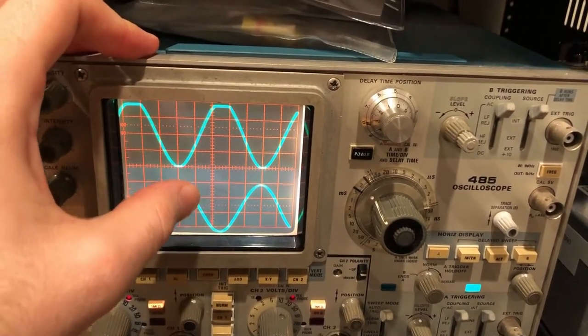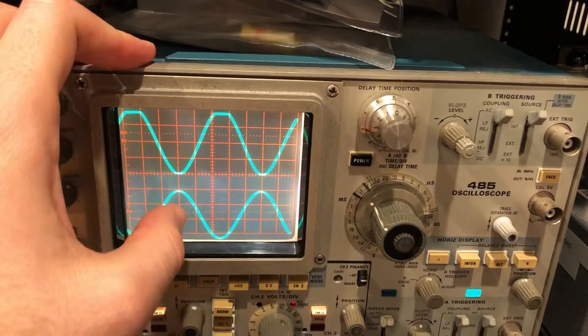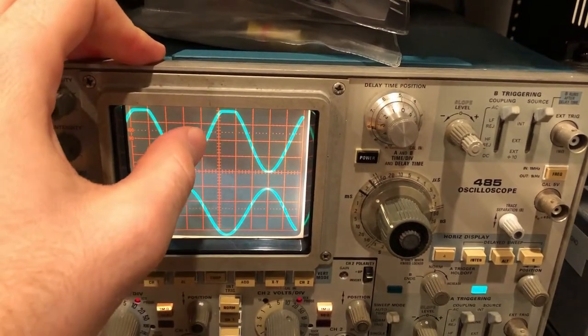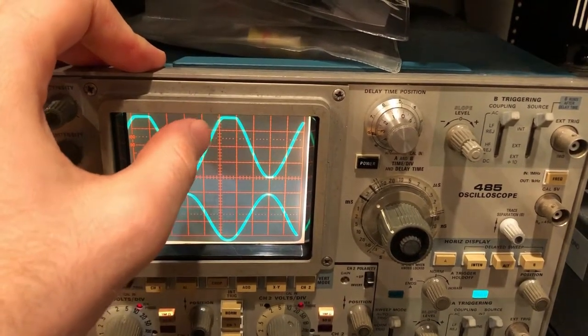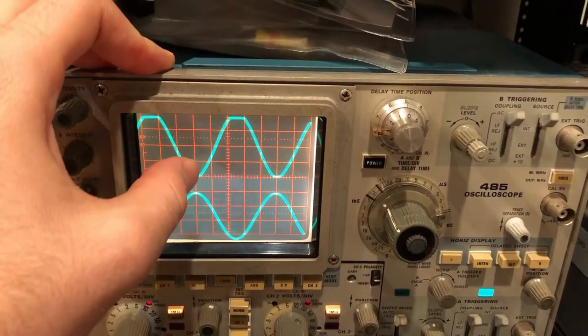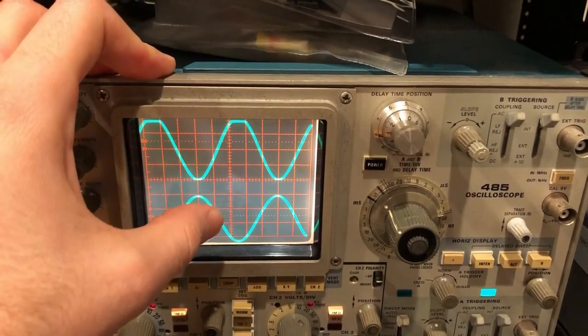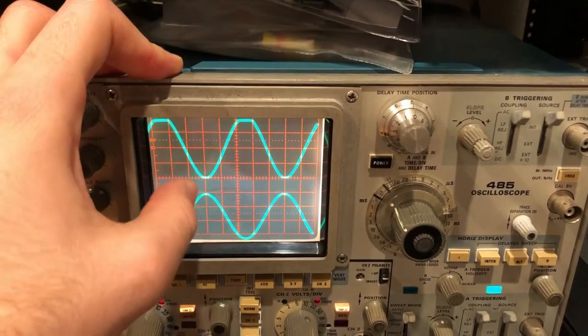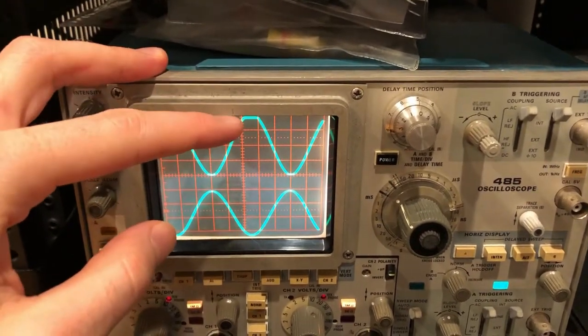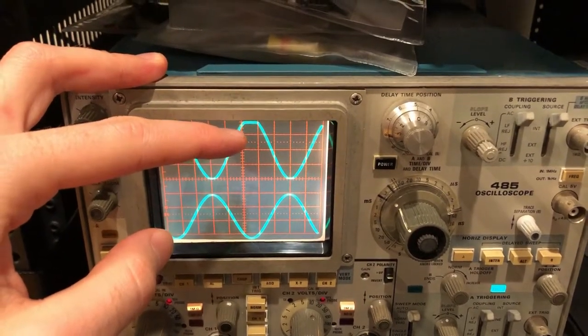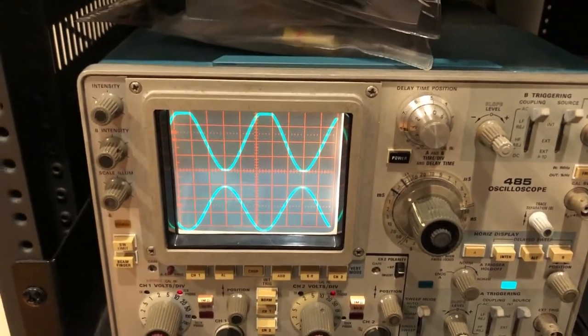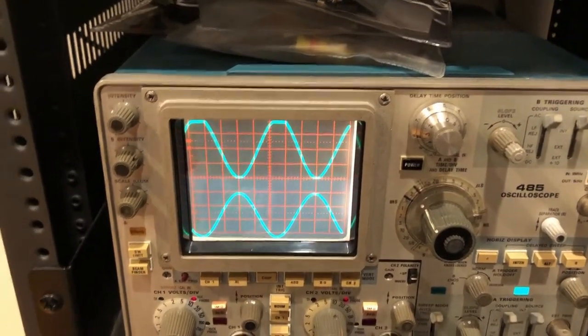So as the input of our second gain stage goes negative, the output is clipping positive. If you follow the previous discussions on the headroom requirements of our constant current source, that's exactly what we're running into up here. This hard clipping is our constant current source running out of headroom when the input swing goes negative.